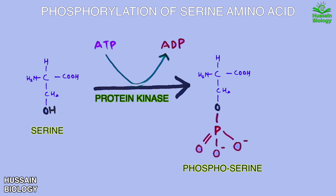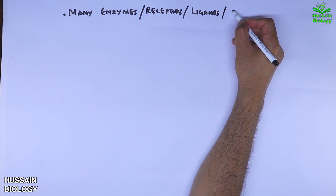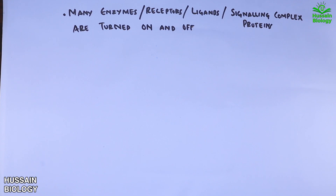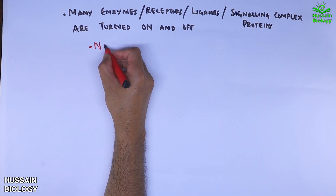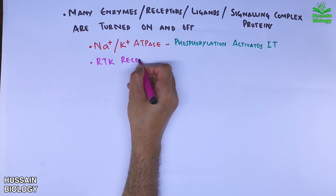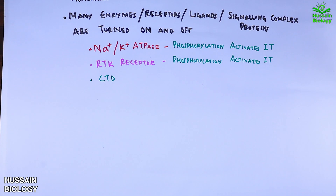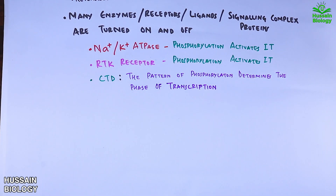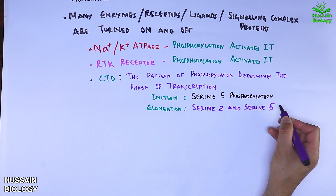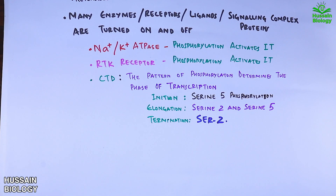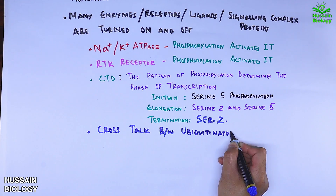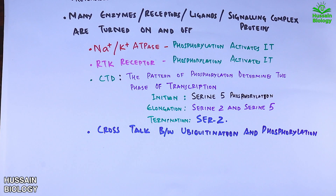Now, what purpose does phosphorylation serve? Many enzymes, receptors, ligands, and signaling complex proteins are turned on and off by phosphorylation. Some basic proteins regulated by phosphorylation and dephosphorylation include sodium-potassium ATPase, and the RTK receptor, where cross-phosphorylation activates it. We also have the CTD — that's the carboxy terminal domain — of RNA polymerase 2, where the pattern of phosphorylation determines the phase of transcription: at initiation there is phosphorylation of serine 5, at elongation phosphorylation of serine 2 and serine 5, and at termination phosphorylation of serine 2. There is also crosstalk between ubiquitination and phosphorylation, and there are hundreds of signaling pathways where phosphorylation and dephosphorylation regulate the activation and deactivation of numerous proteins and enzymes.